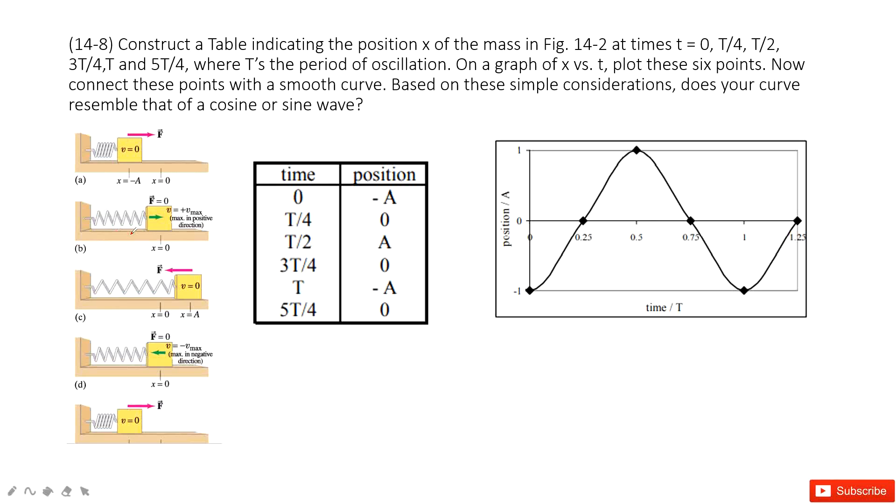In this picture we can see it indicates the position x of a mass. Initially the position is negative A, and then it comes to a quarter of the oscillation period. This is how the oscillation moves - this is one period.